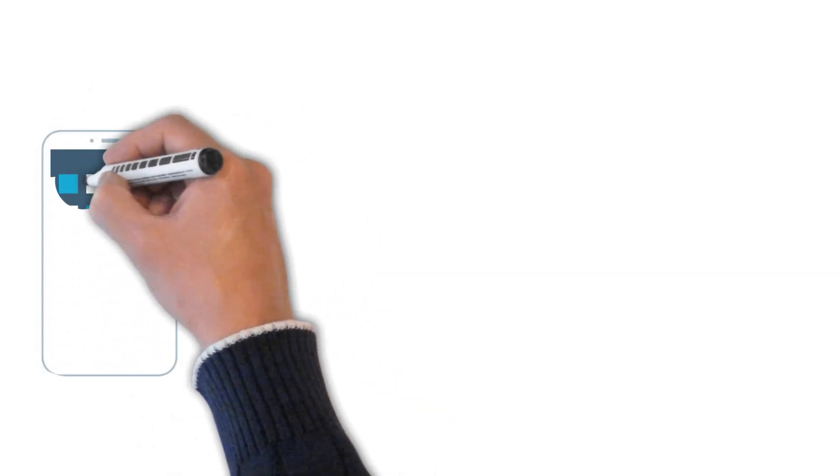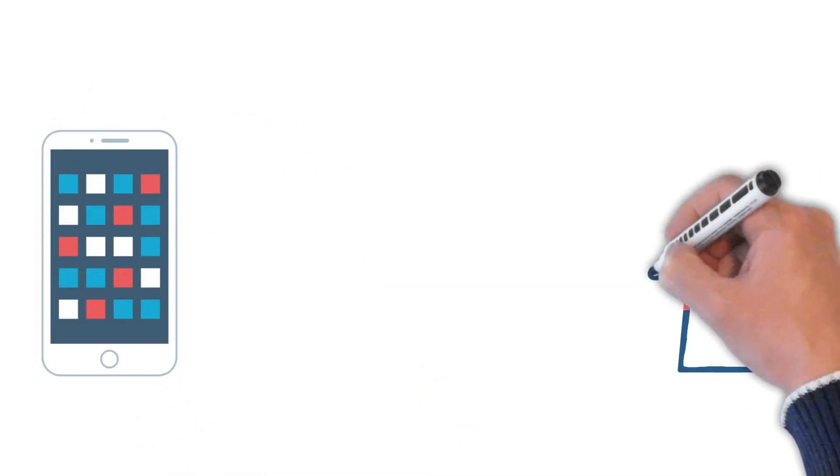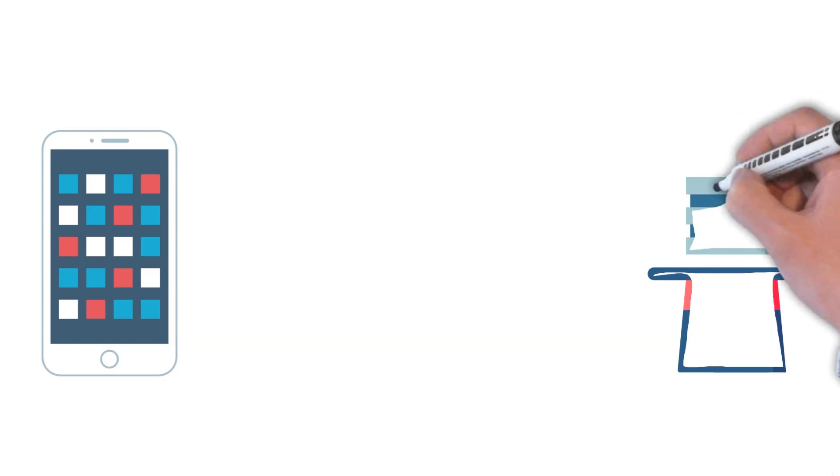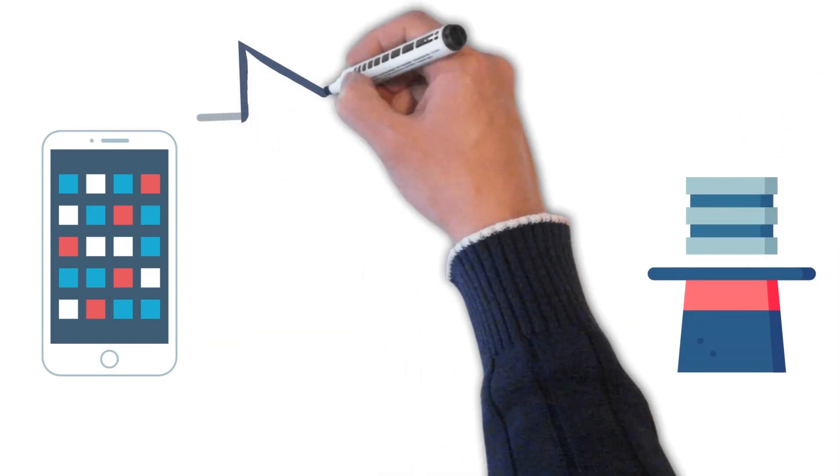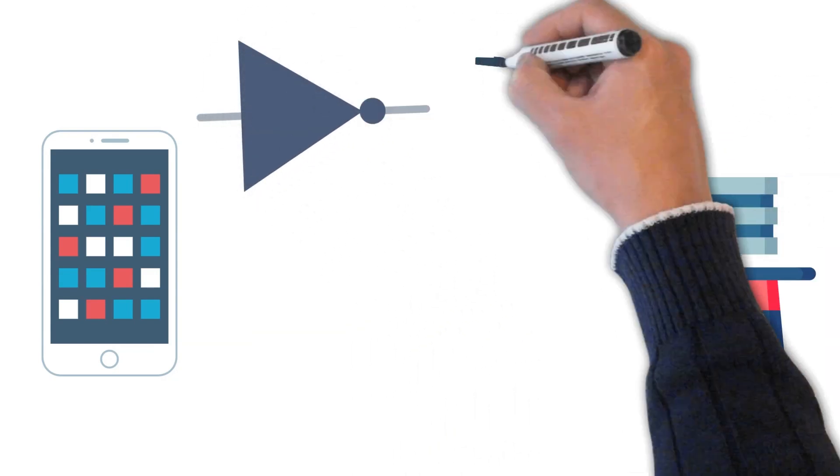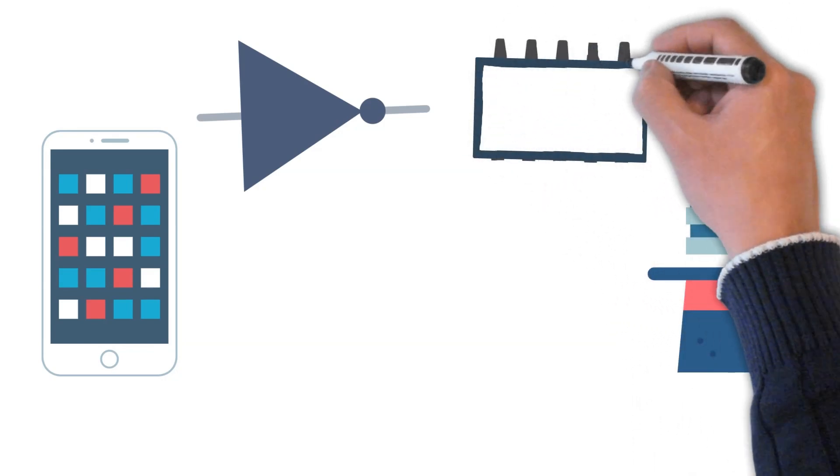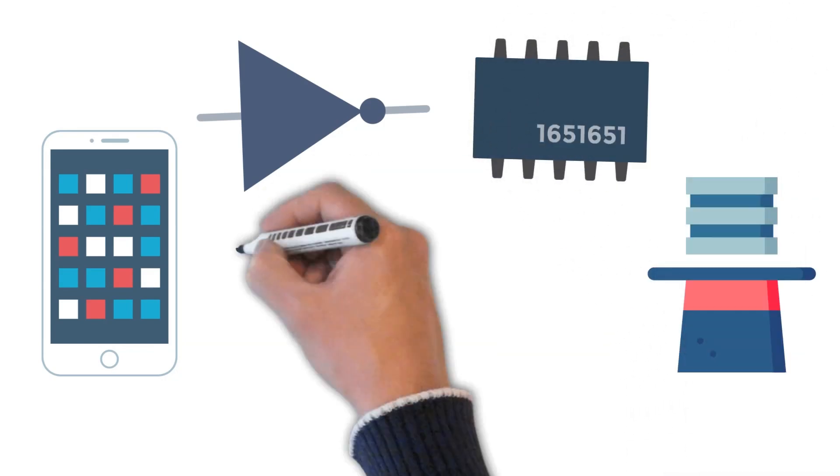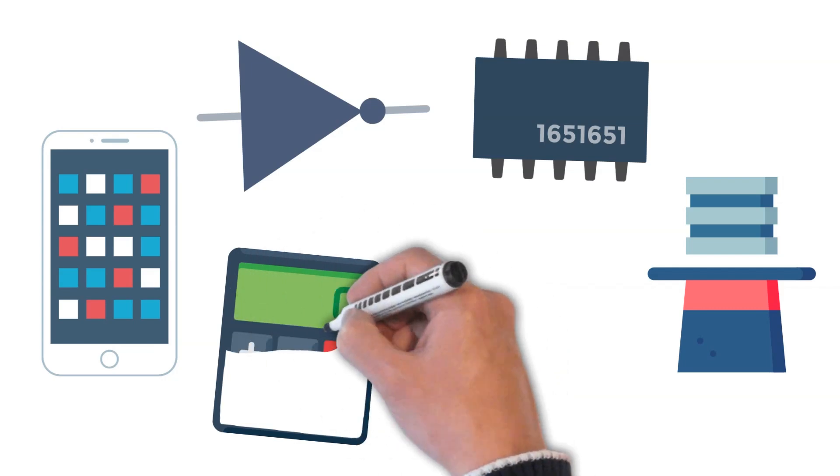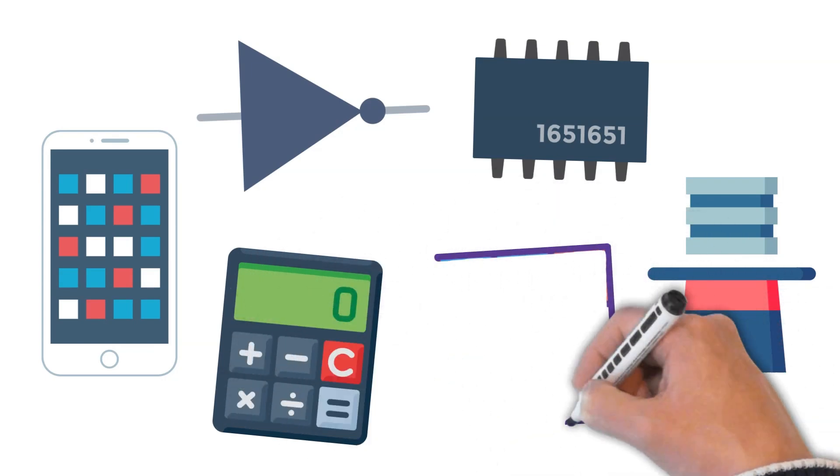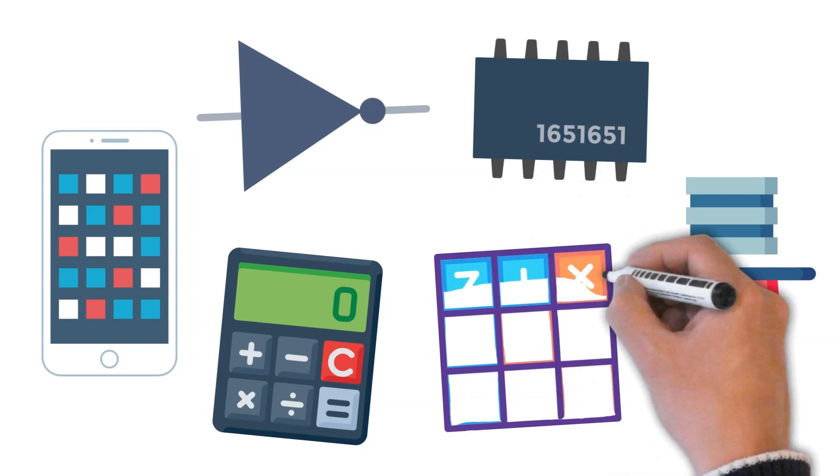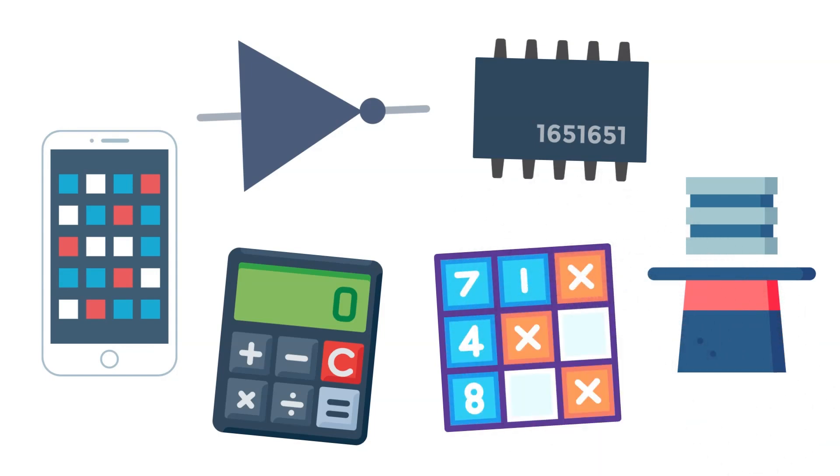Every time you press a button, open an app, or play a video, something behind the scenes decides what happens next. That something is logic. And at the core of it are logic gates, tiny circuits that process ones and zeros to make decisions. From calculators to computers, they're the reason digital devices work. But what exactly are logic gates? And how do they turn simple inputs into smart actions? Let's find out.